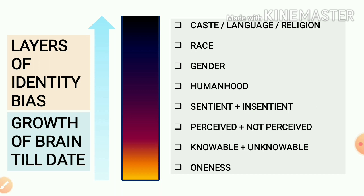Though most often we don't verbalize the word or talk about racial feelings, we still have them. For example, if we are Indian and a Chinese, a Japanese, or a Negroid person comes in front of us, though we don't verbalize that we are racial in nature, immediately the feeling of 'different' comes in us. We begin to compare whether the person in front of us has some advantage over us or we are superior. Now, these things — gender, race, caste, language, religion — are in the order of how strong their root is in our psyche.